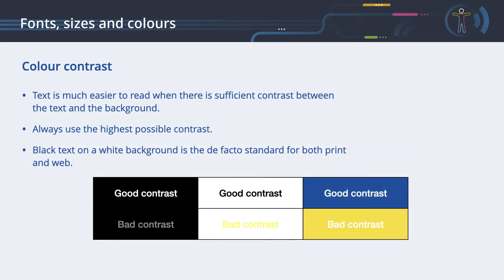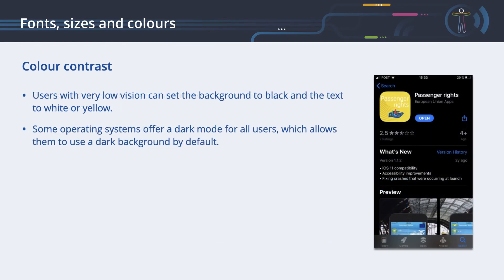Text is much easier to read when there is sufficient contrast between the text and the background. You can see how different color contrasts influence the readability of a text. Always use the highest possible contrast — black text on a white background is the de facto standard for both print and web. However, users with very low vision can set the background to black and the text to white or yellow. Some operating systems offer a dark mode for all users, which allows them to use a dark background by default.